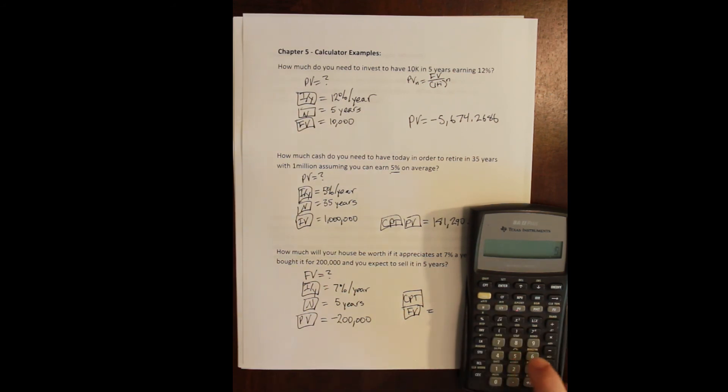We have five years that we're going to hold this house, so 5 and then N. Then to enter a negative value in this calculator, you enter the positive amount and then you press the plus-minus button down here. That gives you your negative, and then we set it as our present value by pressing PV.